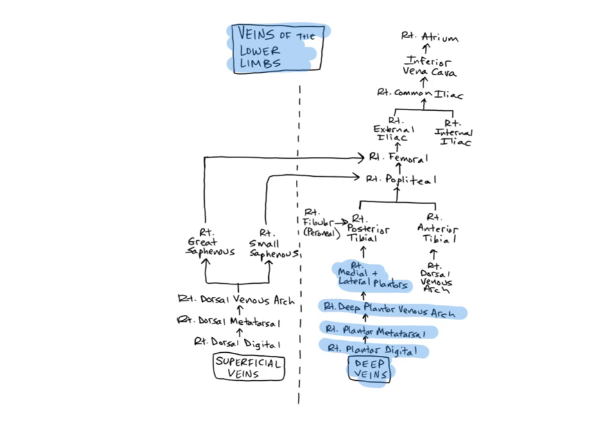The posterior tibial veins begin on the plantar surface of the foot and ascend through the posterior leg deep to the soleus muscle of the calf. They then join the anterior tibial veins to form the popliteal veins. The posterior tibials drain the skin, muscles, and bones from the posterior and lateral aspects of the leg.